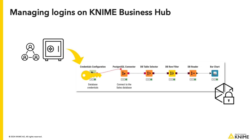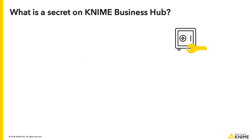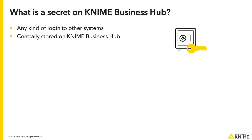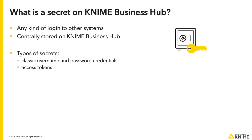This is where KNIME Business Hub secrets can help. A secret is any kind of login to other systems centrally stored on KNIME Business Hub. KNIME Business Hub supports different types of secrets, from classic username and password credentials, to access tokens, to generic or auth tool, to provider-specialized logins, and probably more are being added right now as we speak.